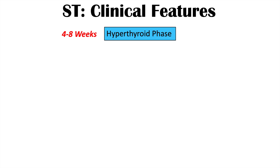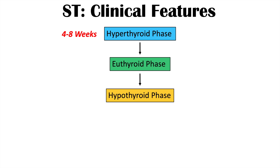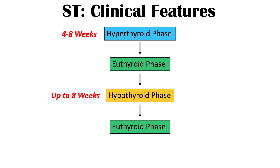Once the thyroid hormone has become depleted, it starts to level off and decrease into normal ranges, leading to a euthyroid phase — a phase of normal thyroid functioning — although it's temporary because the follicular cells themselves are not producing thyroid hormone. This eventually leads to an ultimate depletion of thyroid hormone in the blood, causing a hypothyroid phase, which can itself last up to eight weeks. Then follicular cells can regenerate and produce thyroid hormone to bring levels back into the euthyroid range. It's important to note that a patient may not experience all stages — they may skip directly from the hyperthyroid phase to the hypothyroid phase.